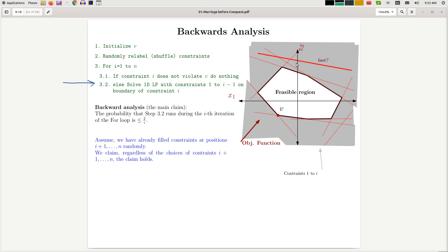Let's say it picks this one. So this is at position number i. If that's the choice of constraint for constraint number i, will that make the algorithm run at step 3.2?